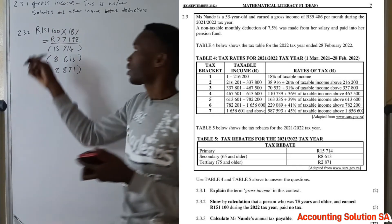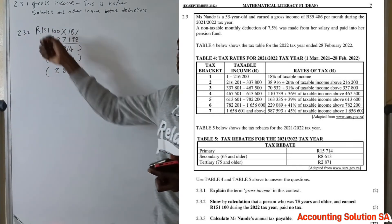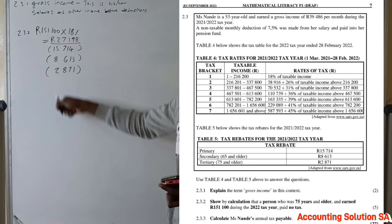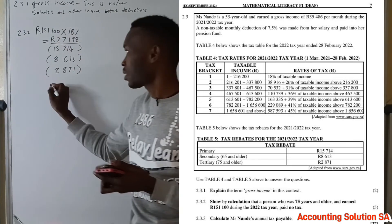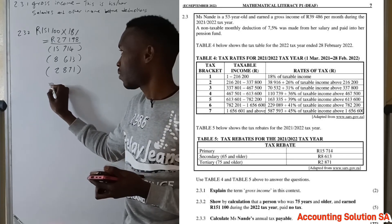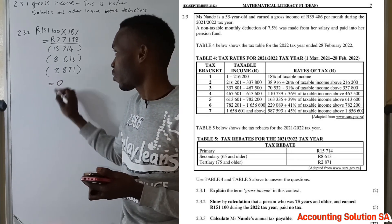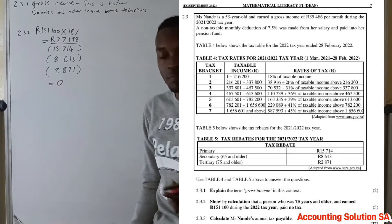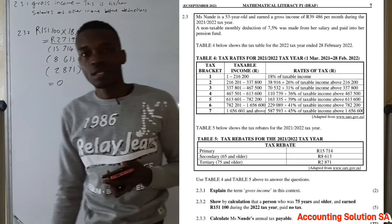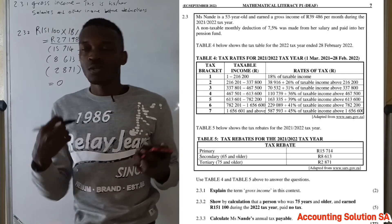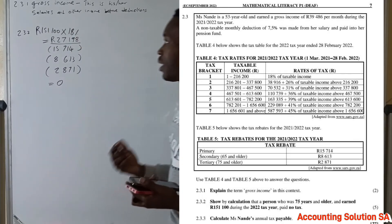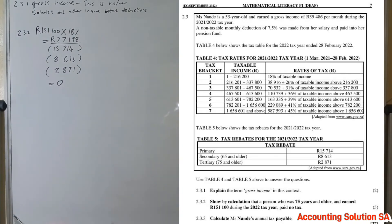If you take the taxable amount of R27,198 and subtract all three rebates — R15,714 plus R8,613 plus R2,871 — you are left with zero, which means that this person is not going to pay any tax. We have proved that.